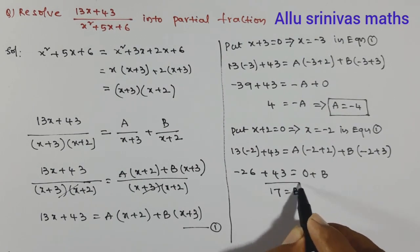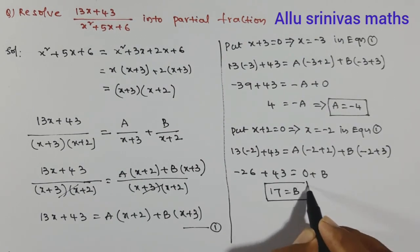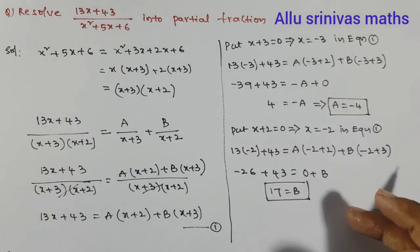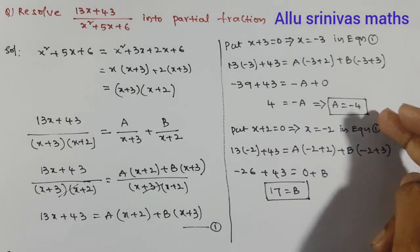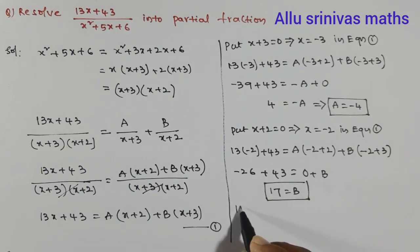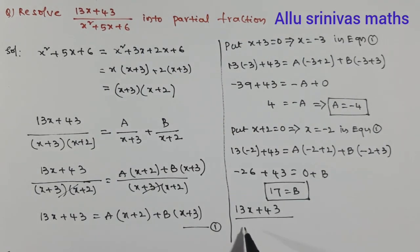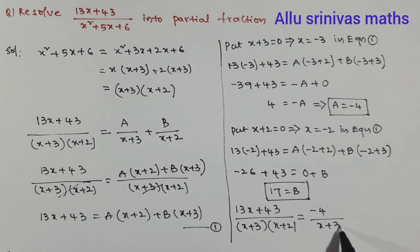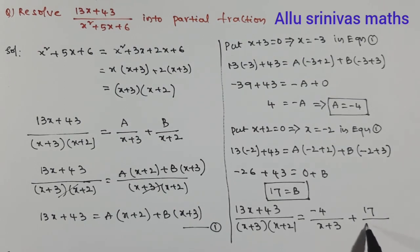Both values have been determined: A = -4 and B = 17. So we write: (13x+43) divided by (x+3)(x+2) equals -4 divided by (x+3) plus 17 divided by (x+2).